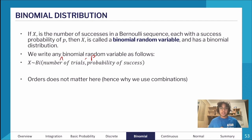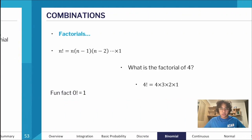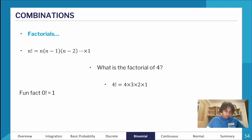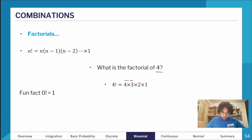Because order doesn't matter, we use combinations or combinatorics. We use something called a factorial: n factorial is n times (n−1) times (n−2) and so on down to one. For example, 4 factorial is 4 × 3 × 2 × 1. Zero factorial equals one, which is why it's not included in the product.